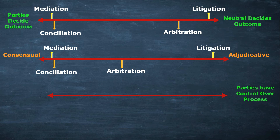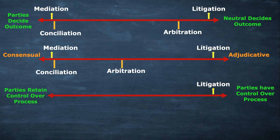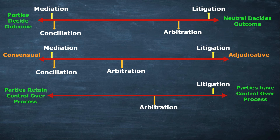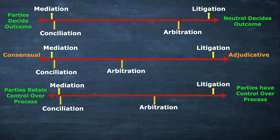Now let's check the third continuum: 'parties have control over process' on one side and 'parties retain control over process' on the other. Again, litigation is very close to 'parties have control over process,' and arbitration is more towards 'parties retain control over process' but still leans towards the left. Mediation falls squarely at 'parties retain control over process,' and conciliation shows the same pattern as before.